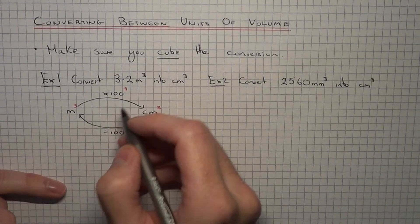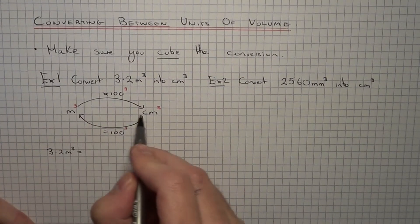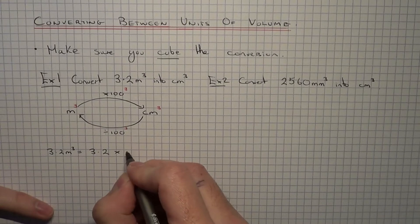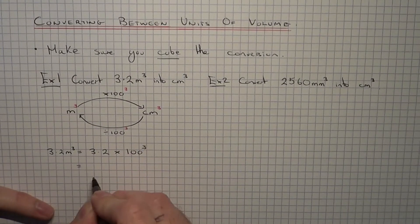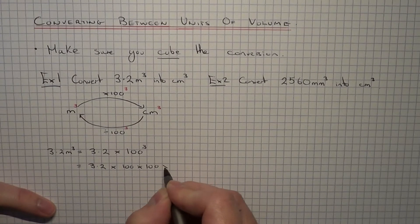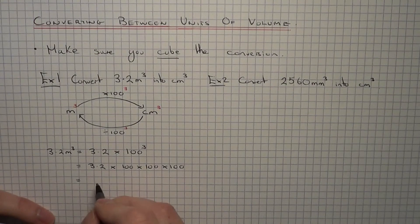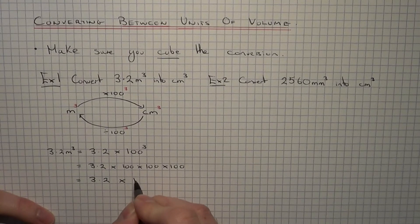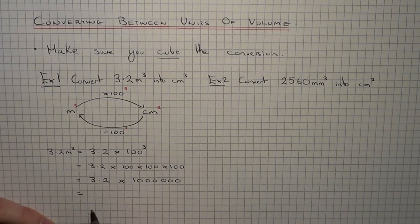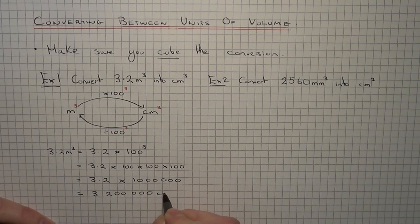So let's complete the example. We've got 3.2 metres cubed, and for metres cubed to centimetres cubed, we have to multiply it by 100 cubed. Now, 100 cubed is 100 times 100 times 100, and that is exactly the same as a million. So it's 3.2 times 1 million, which gives us a final answer of 3,200,000 centimetres cubed.